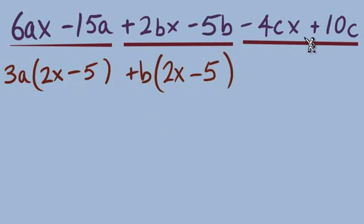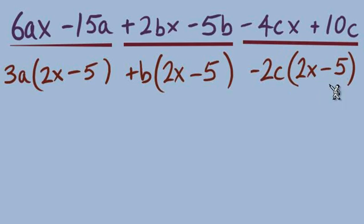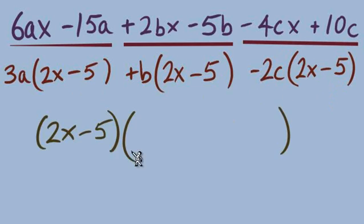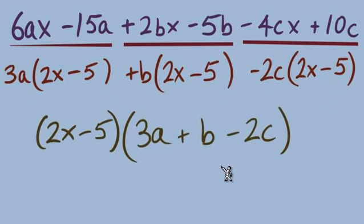GCF well we have an issue with signs so let's make it a negative GCF and we can divide out a 2 and c and that will leave us with the positive 2x and minus 5. So the 2x minus 5 becomes one factor in our answer and just like before we would use these GCFs as terms in our other factor and we're going to do that with this one also it's just going to be made up of three terms 3a plus b minus 2c.